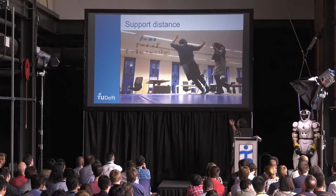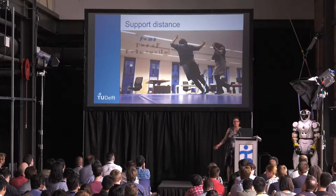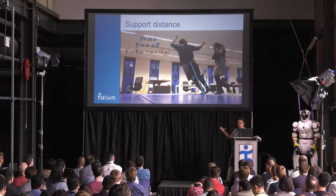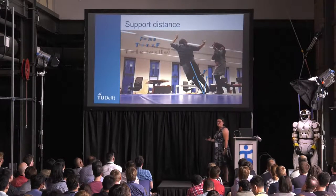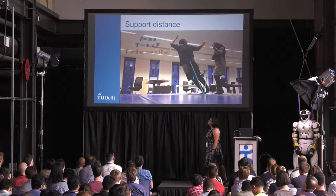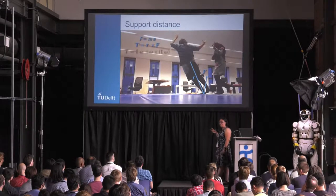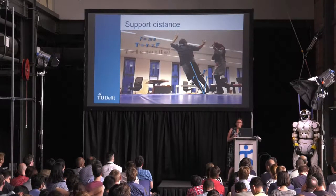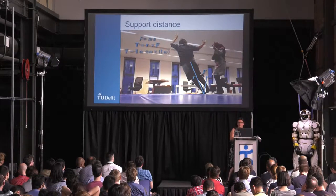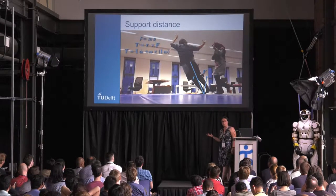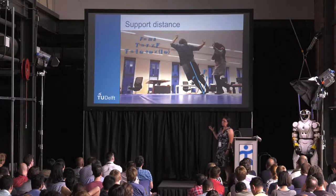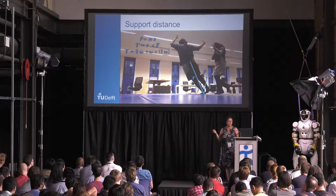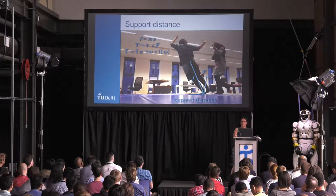But it doesn't directly show us where the support is. If we go further, we know the torque is the cross product between the arm of the force and the force itself. The torque is related to the angular velocity and the angular acceleration. So we can solve this with the information we have and get an estimate for the support distance.